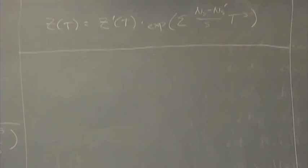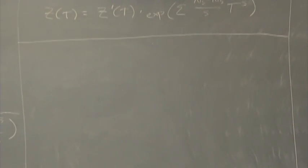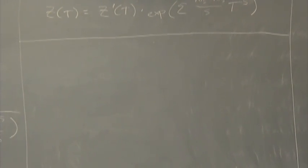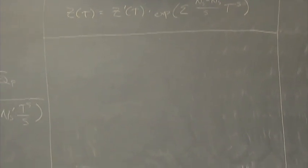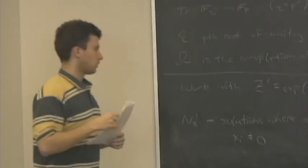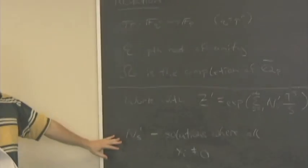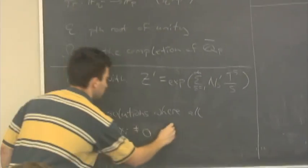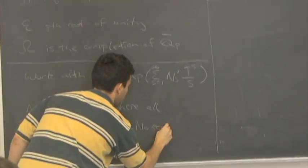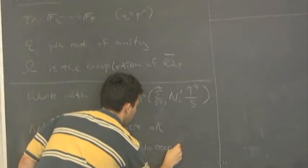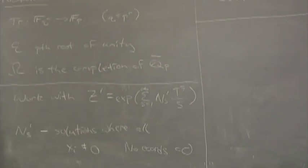The key link in the proof is that we want to learn about N_S' — we want to count solutions where no coordinate is zero — and we're going to use a character to do that.